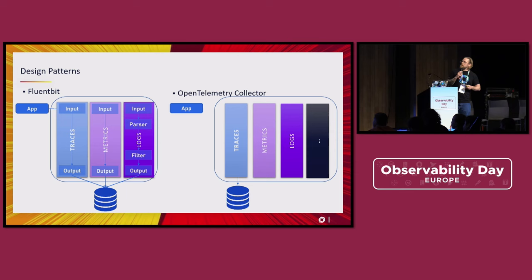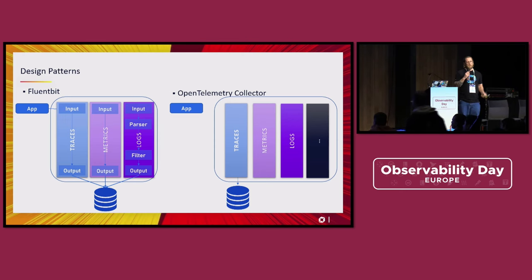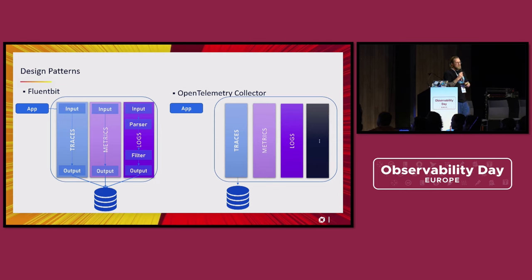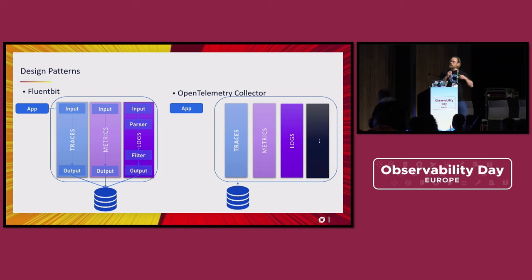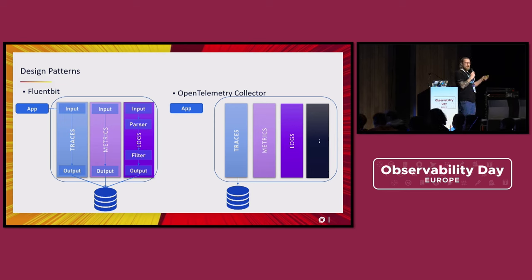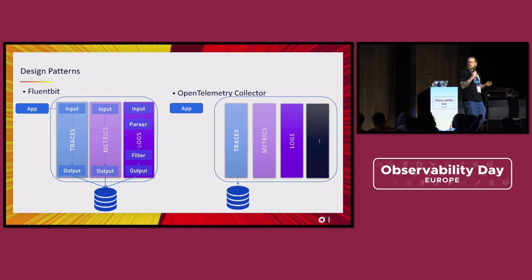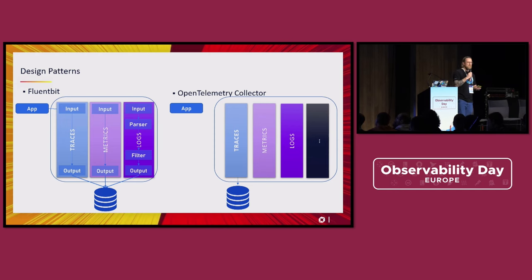When it comes to the pipeline itself, the Collector supports all signals — traces, metrics, logs — and we should expect the same once continuous profiling is supported. In FluentBit 2.0, for logs you can receive, parse, filter, and export. But when it comes to metrics and traces, it's more like a proxy or gateway — you receive something, you're not able to modify anything, you just send it out. Keep that in mind, because many constraints with FluentBit are mainly related to this.